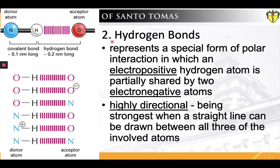The second non-covalent interaction is the hydrogen bond. A hydrogen bond is a partial intermolecular bonding interaction between a lone pair on an electron-rich donor atom like nitrogen or oxygen, and the antibonding molecular orbital of a bond between hydrogen and a more electronegative atom or group. Simply stated, this bond represents a special form of polar interaction in which an electropositive hydrogen atom is partially shared by two electronegative atoms. Unlike a typical electrostatic interaction, this bond is highly directional, being strongest when a straight line can be drawn between all three of the involved atoms.